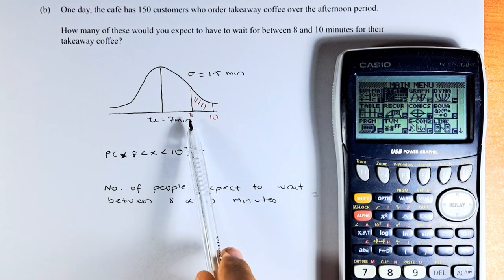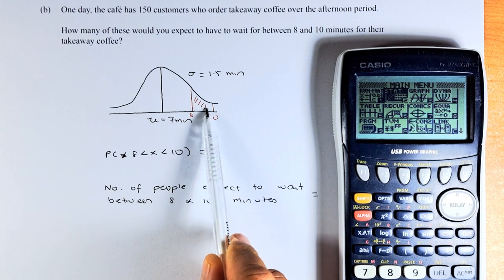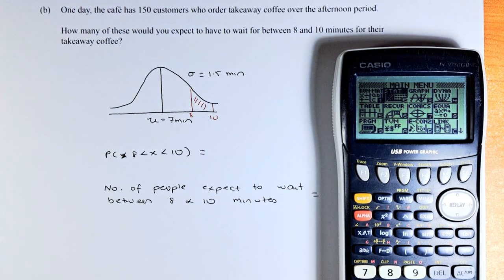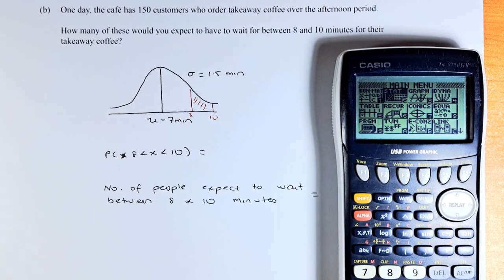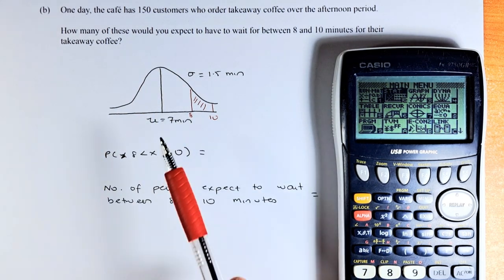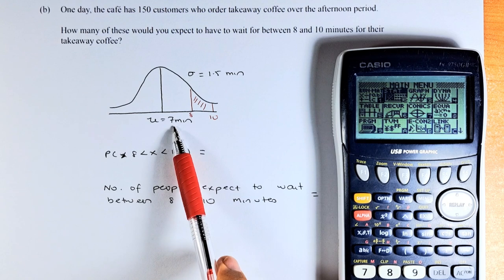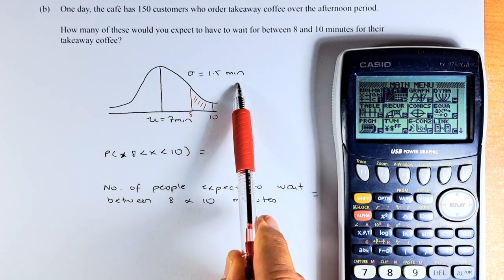We need to find the probability between 8 to 10, which is the area in red. Then we are going to calculate that probability multiplied by 150 to get the expected value. The mean is 7 from the previous example and the standard deviation is 1.5.